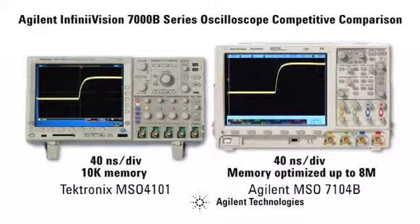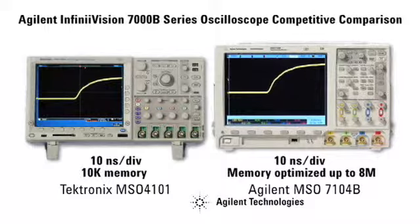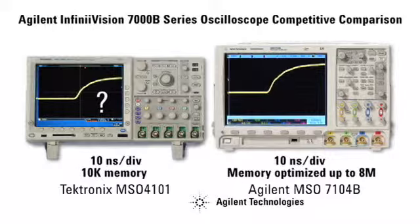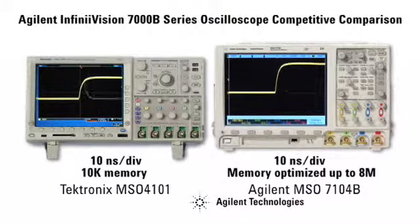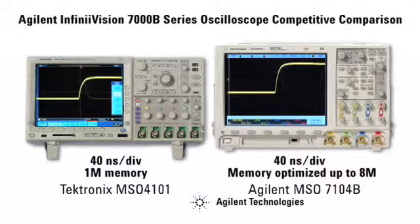But look what happens when we change the time-based setting from 40 nanoseconds per division to 10 nanoseconds per division. The glitch is no longer visible on the Tektronix scope, even though we know it's present. Let's go back to our original settings and enable deep memory on the Tektronix scope.